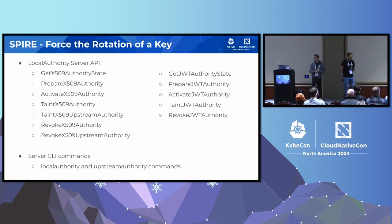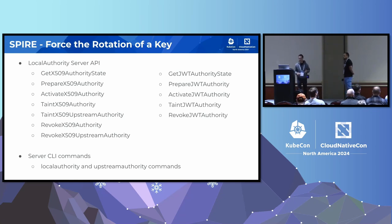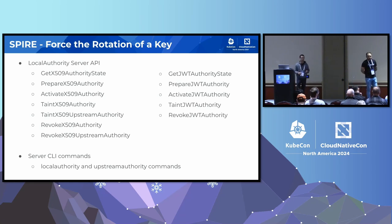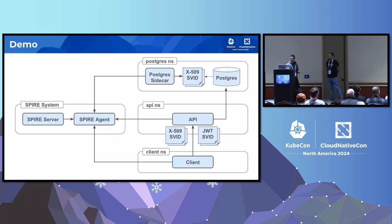As part of this work, we added a new API called the local authority server API. With this API, you are now able to get the current state of the authorities. You can prepare, activate, taint, and revoke the authorities. We also have CLI commands that call the API where you can perform all those actions. Now is the time to show how this works.